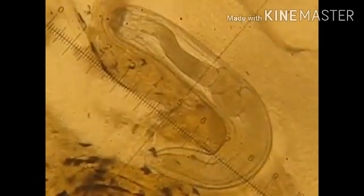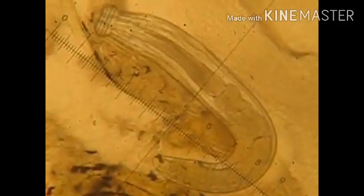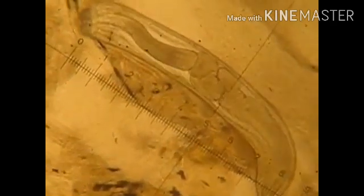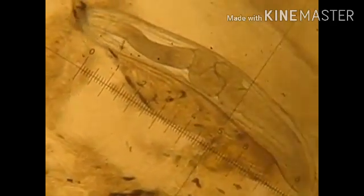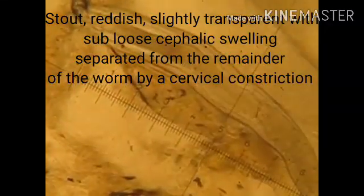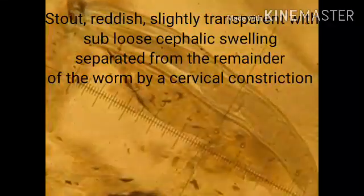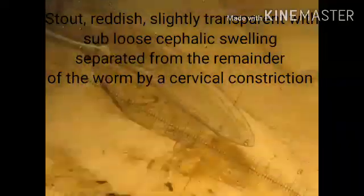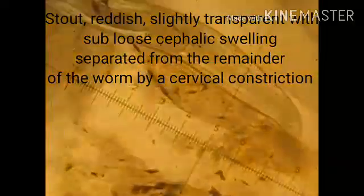Natostoma spinadurum is one of the leading causes of natostomyosis in East and Southeast Asia. A distinguishable characteristic of Natostoma spinadurum is that it is stout, reddish, and slightly transparent with subluciphalic swelling separated from the remainder of the worm by a cervical constriction.